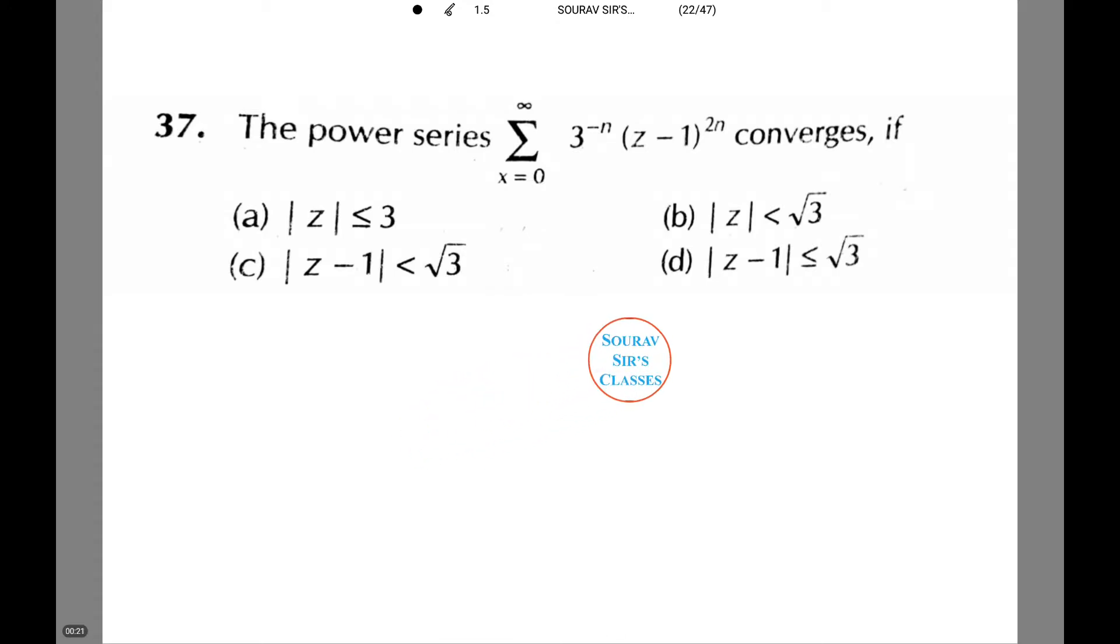Summation x equals 0 to infinity, 3 to the power minus n times z minus 1 to the 2 to the power n converges if. We need to state the conditions for this power series.